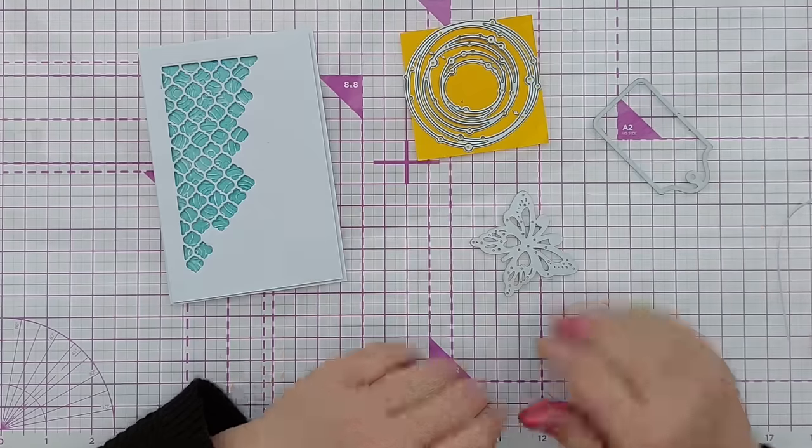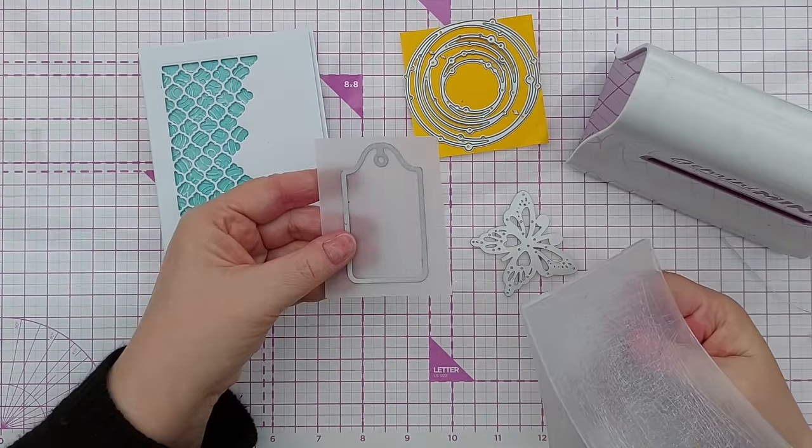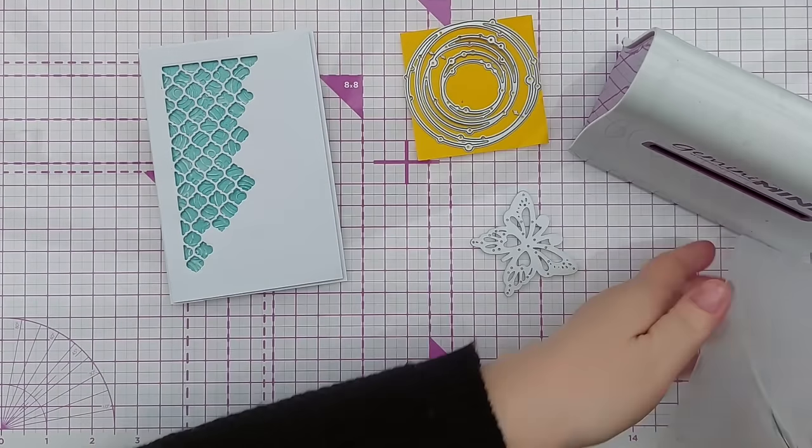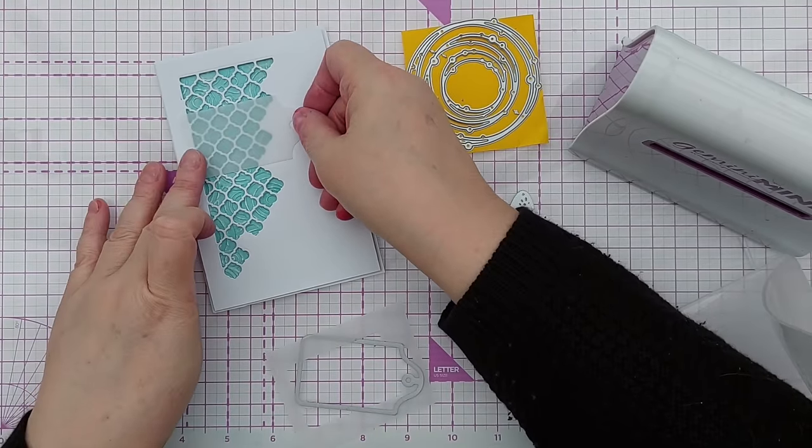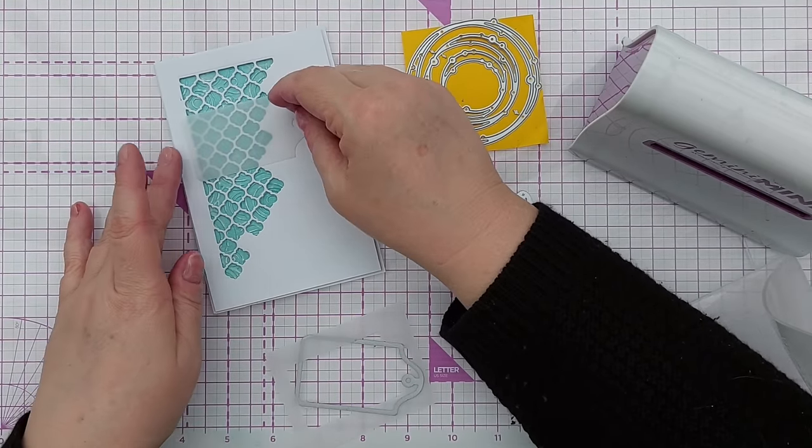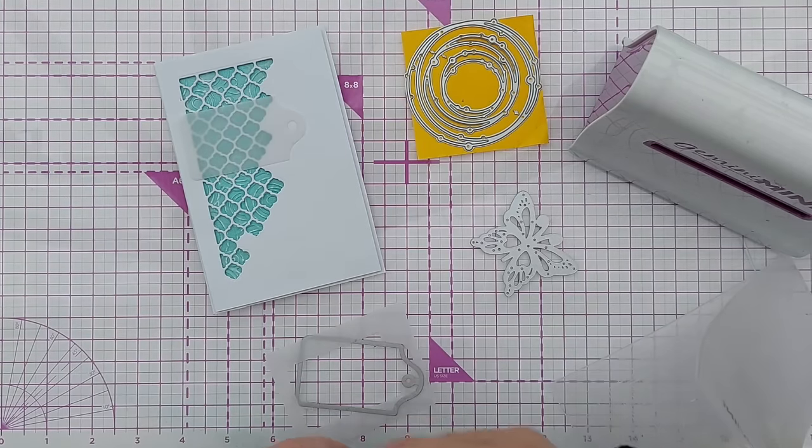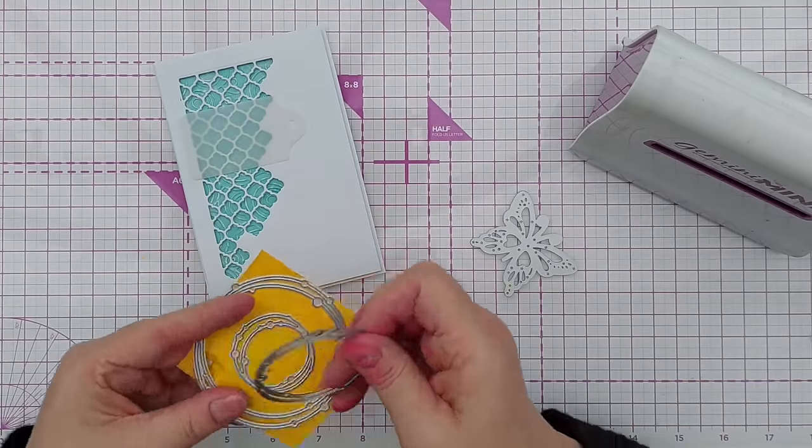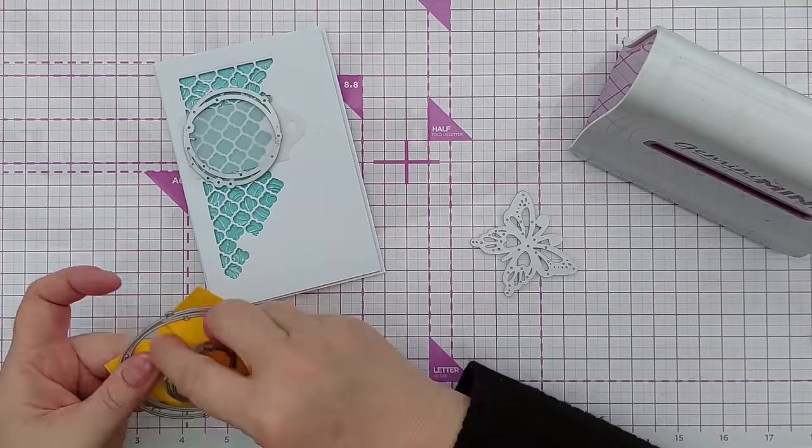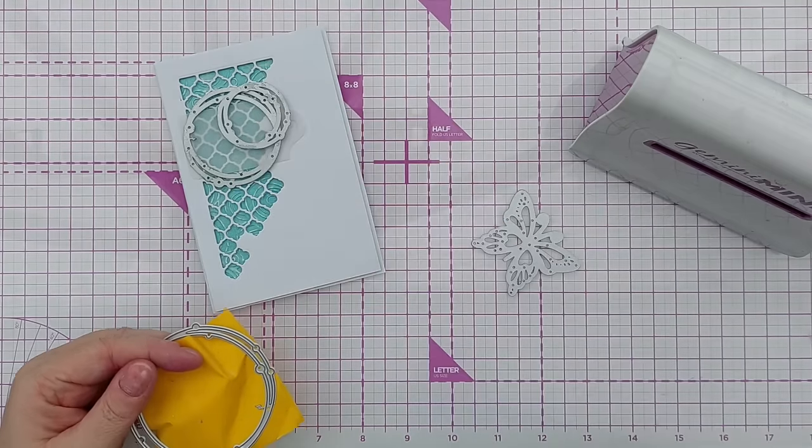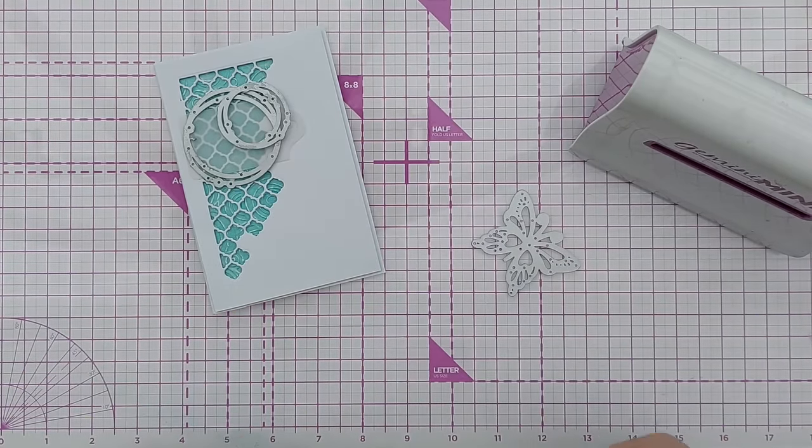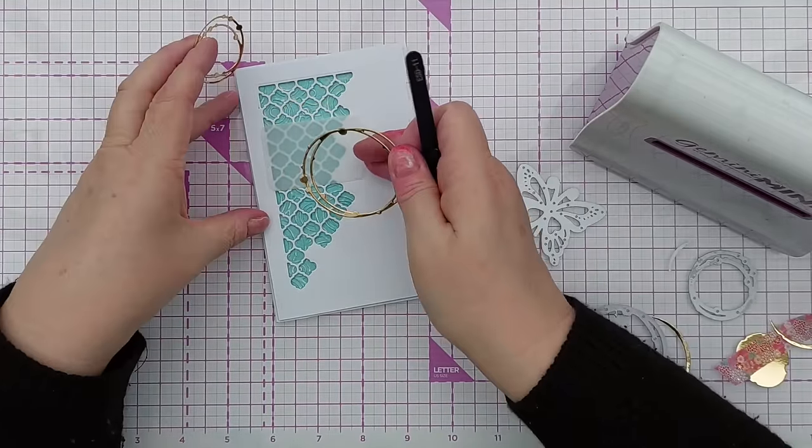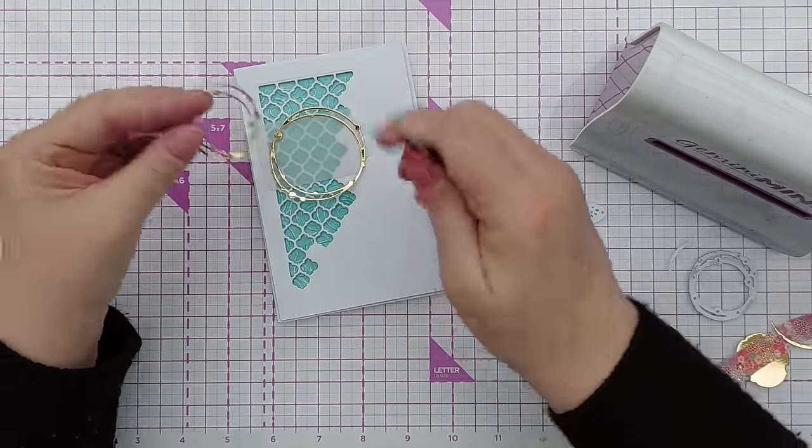Now I'm going to construct my focal point. The first thing I'm going to cut is a tag made from vellum that's going to go there, providing a surface but not obscuring all the detail behind it. Then I've got these from gold foil cardstock, maybe just those two. Something like that. I wanted to use circles because I've got these circles in the background, so I thought I'd bring them forward.